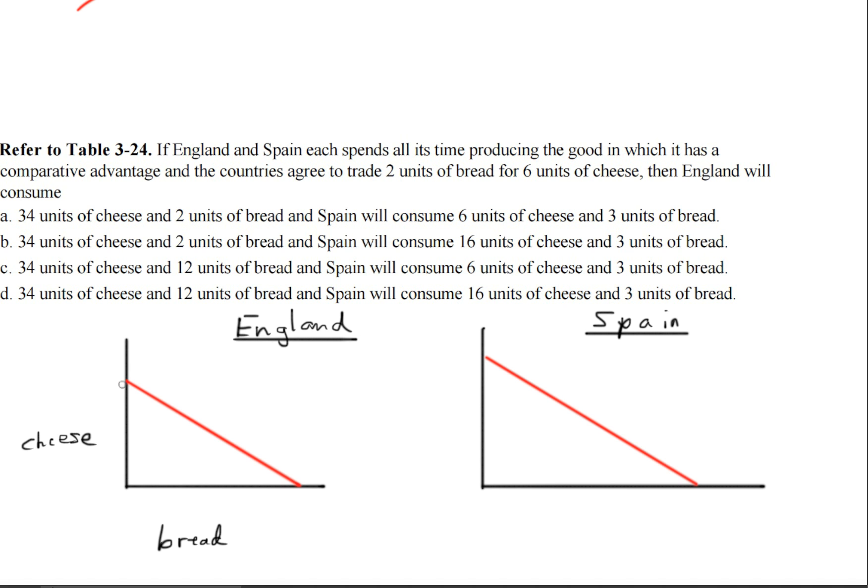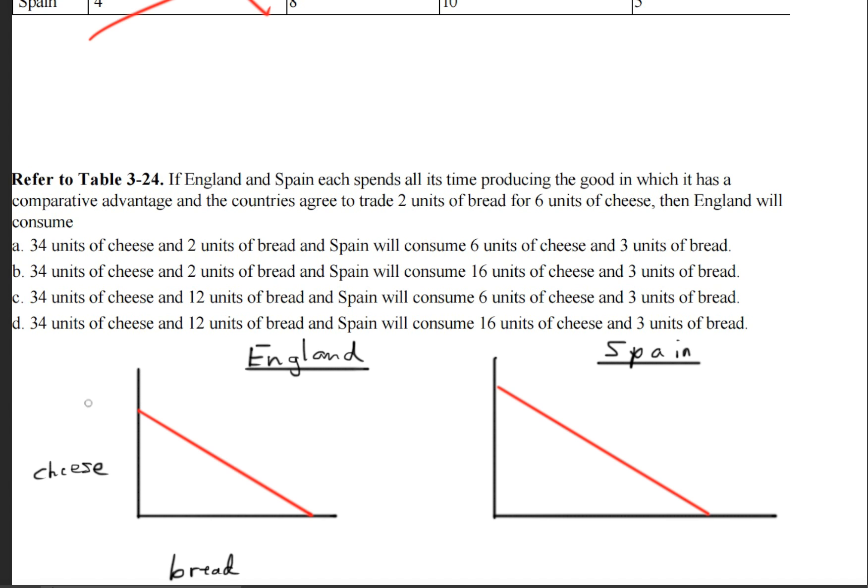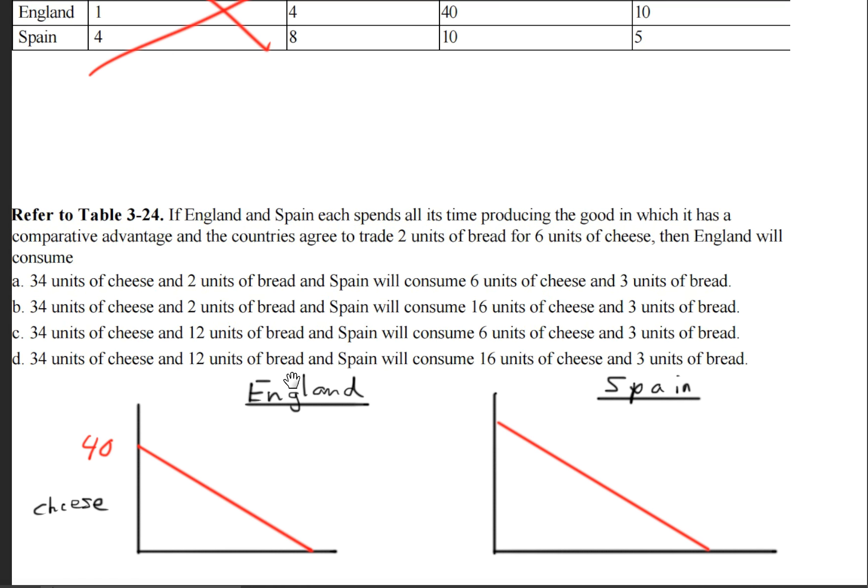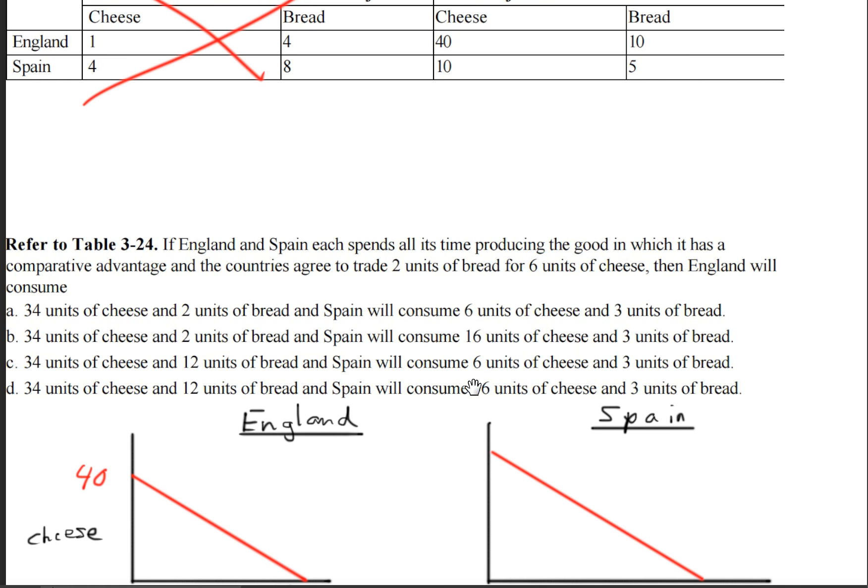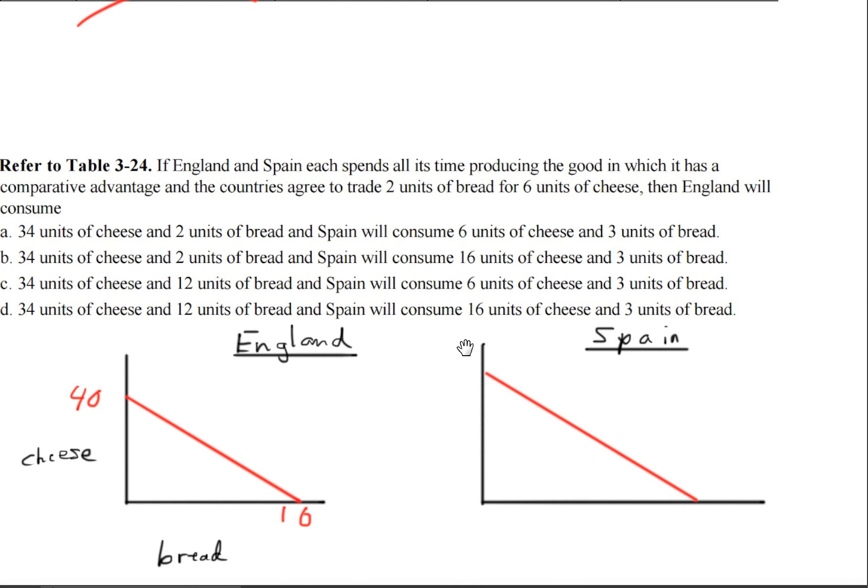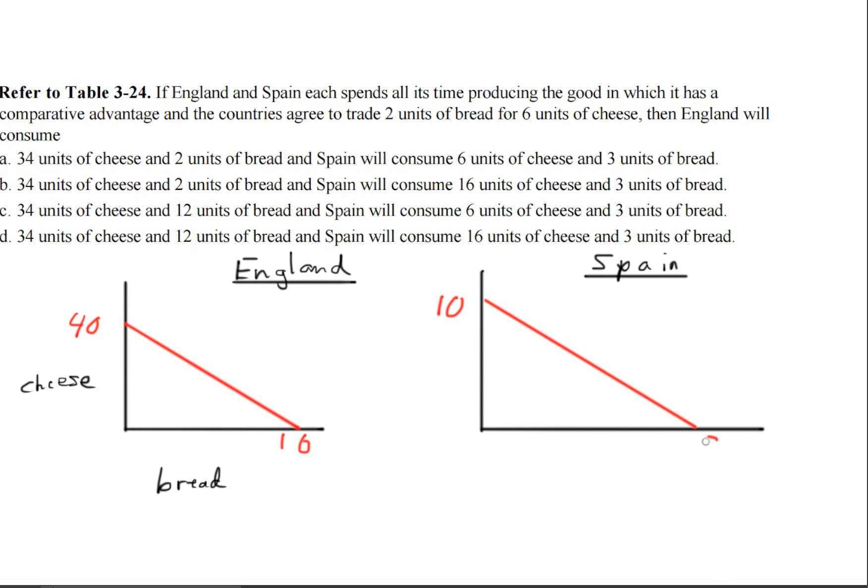So for England, the maximum amount of cheese it can produce will be 40, and for bread it will be 10. We do the same process for Spain. The max it can produce for cheese is 10, and the max it can produce for bread is 5.